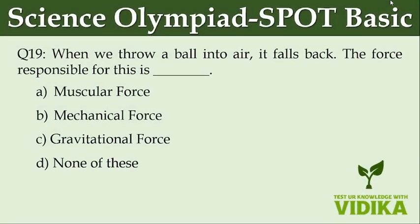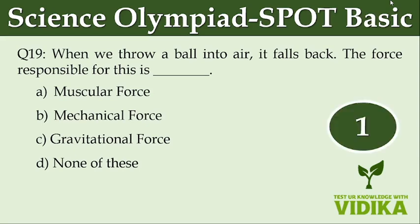When we throw a ball into the air, it falls back. The force responsible for this is known as dash. Option A, muscular force. Option B, mechanical force. Option C, gravitational force. Option D, none of these.